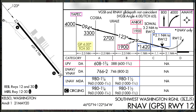This approach offers an LPV DA at 608 feet, about 588 feet above the runway, but note the visibility requirement of 1¾ statute miles. If you fly to the 2D LNAV MDA of 980 feet, note that the VDP is 2.1 nautical miles from the threshold, about 1 mile more than the 1¾ statute mile visibility requirement.